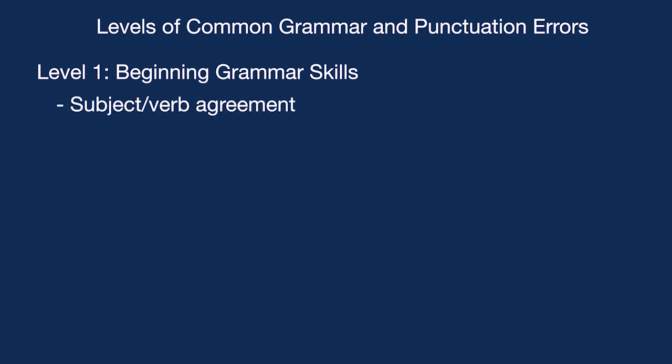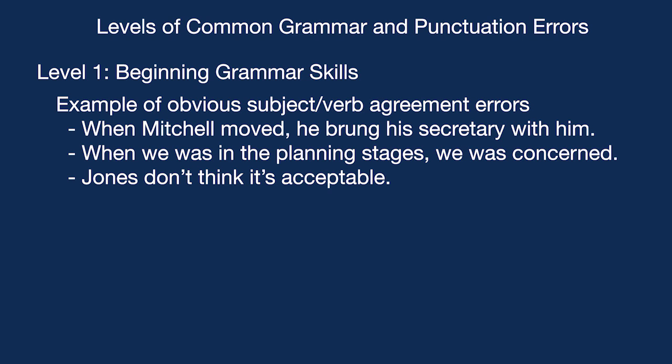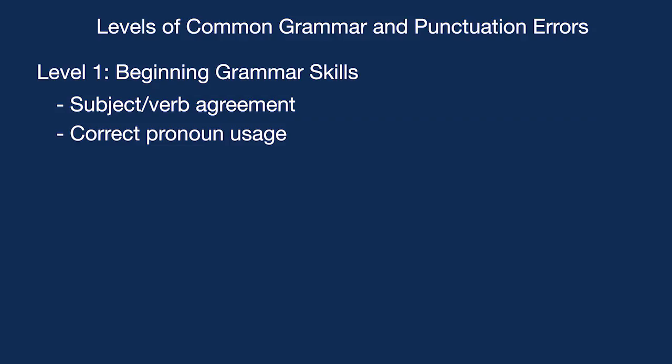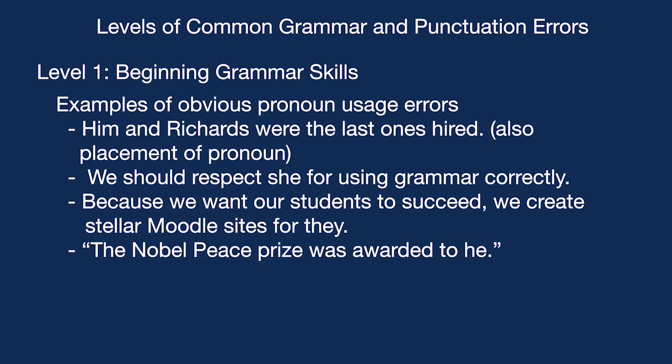For beginning grammar skills, look for very obvious subject-verb agreement errors, such as 'he brung his secretary,' 'we was concerned,' or 'Jones don't think it's acceptable.' Another level involves obvious pronoun usage errors, such as 'him and Richards were the last ones hired,' 'we should respect she for using grammar correctly,' or 'the Nobel Peace Prize was awarded to he.' These examples are clearly incorrect and pretty obvious for native speakers.